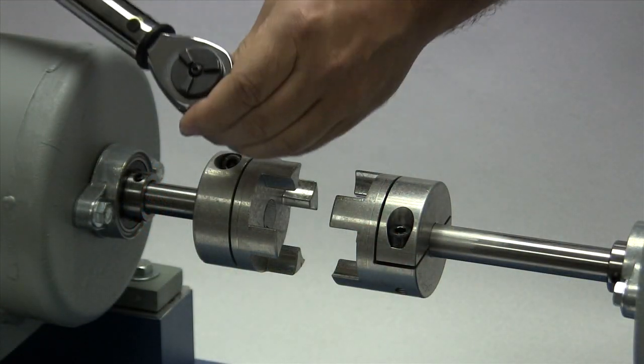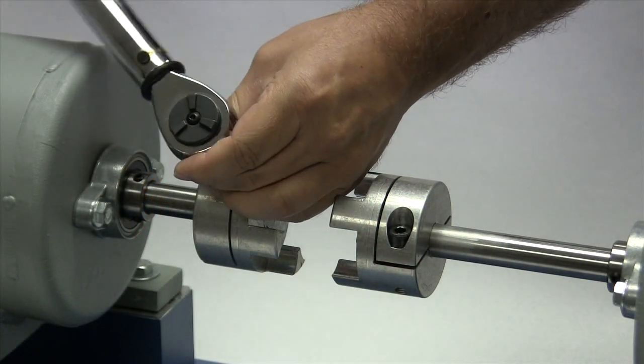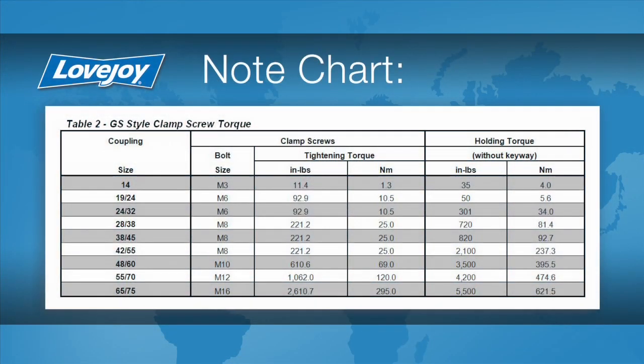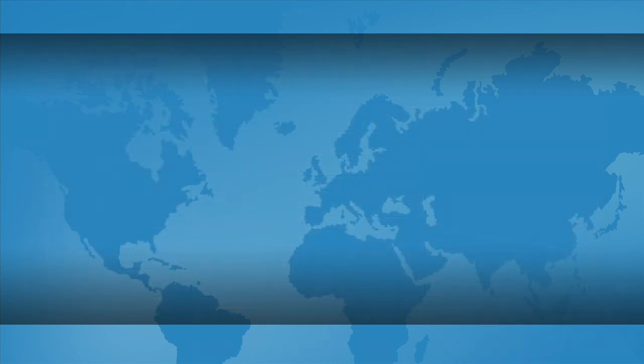The clamp screws should be tightened to the recommended torque settings using a calibrated torque wrench. The use of a torque wrench is important. If the clamp screws are not tightened enough, the hub could work loose and slide on the shaft. If the clamp screws are too tight, they could damage the hub.